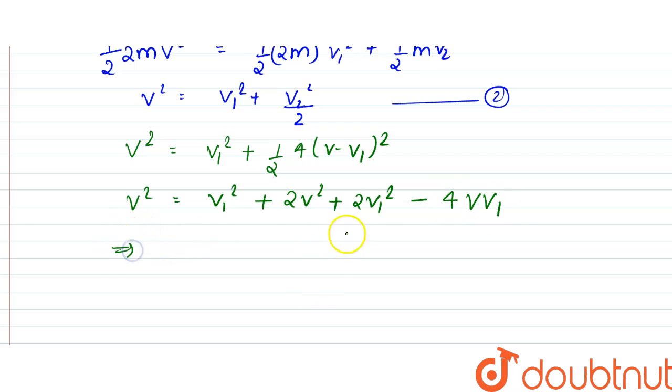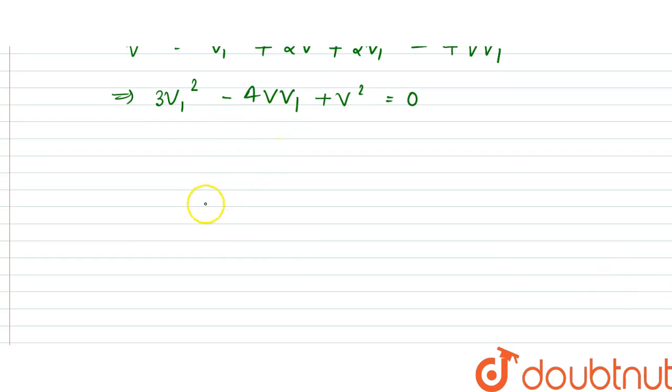4v·v₁ plus v² equals zero. That is what we get from here when we solve. So what we do is divide the whole equation by v², so it would be 3(v₁/v)² minus 4(v₁/v) plus 1 equals 0. So we can now find the solution to this equation. Right, so it is